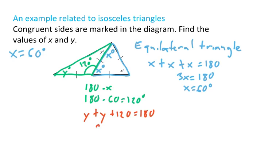Combining like terms and then subtracting 120 to the other side would give me 60, and dividing by 2 would give me that Y is 30 degrees.